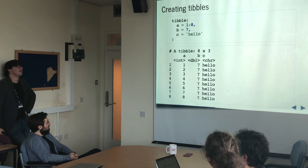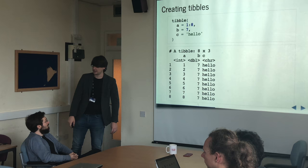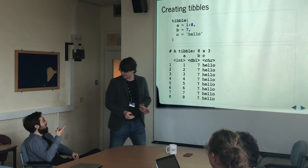You can create a tibble like this: a is the range 1 to 8, b is all 7s, and c is 'hello there'. As you can see, you can have different data types in there. Doing a range is pretty easy just by using the colon operator.